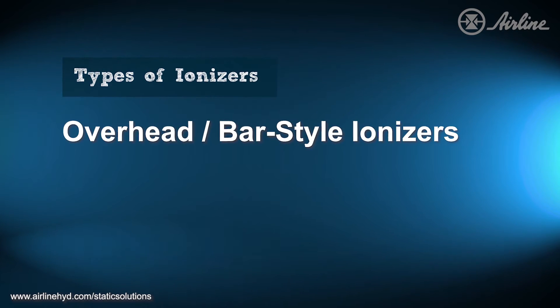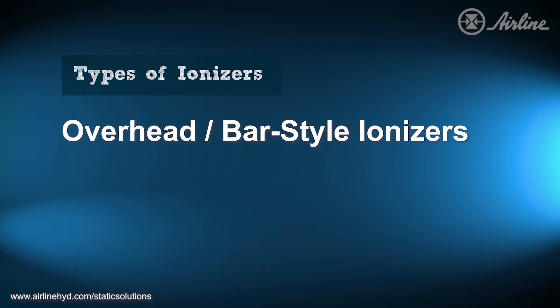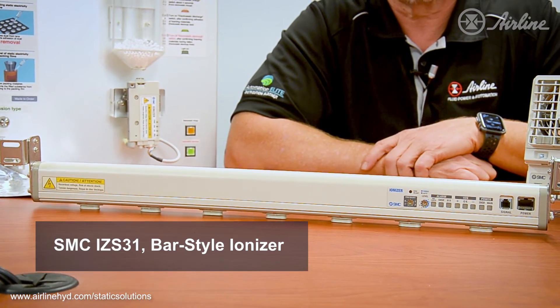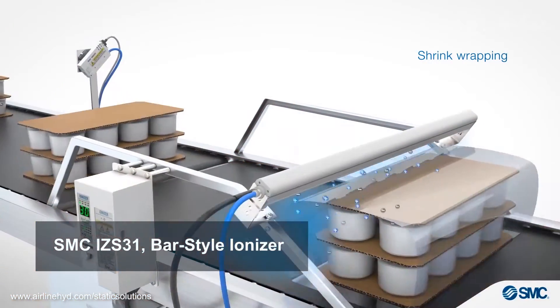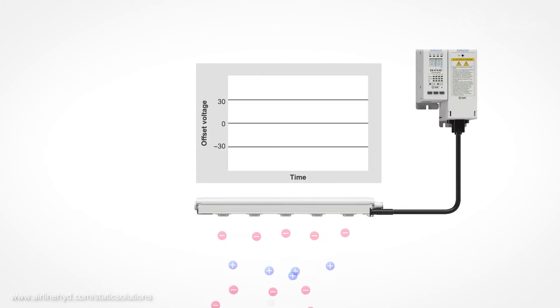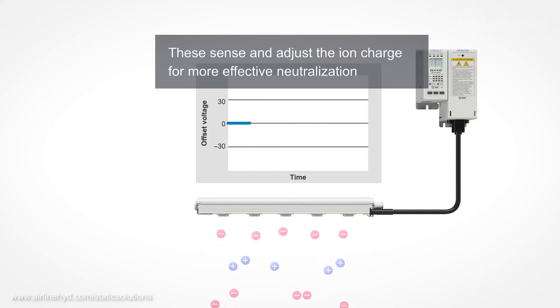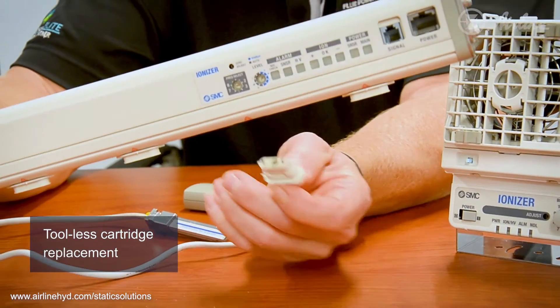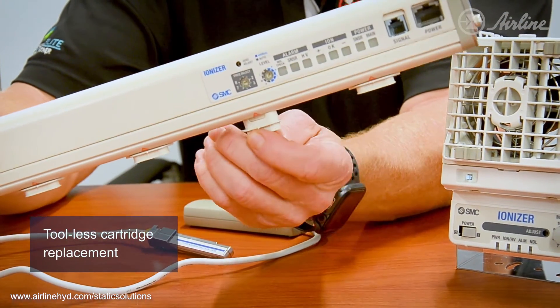The next style of ionizers are called the overhead ionizers, they're also called bar ionizers. The IZ series generates a curtain of ions that are effective for a distance of up to six and a half feet. They offer models with auto balancing sensors, a rapid ionization model, a low amplitude model for sensitive electronics, and models with remote control capabilities. Maintenance is easy with these ionizers as their needle cartridge is very easy to clean and replace with a quarter turn.